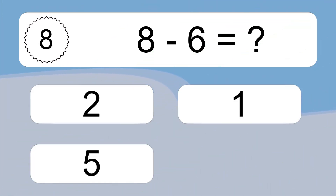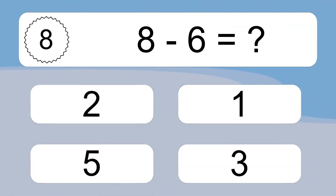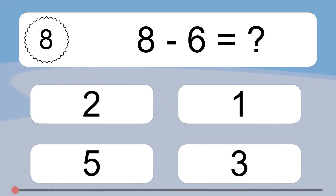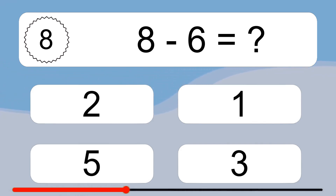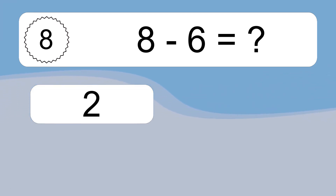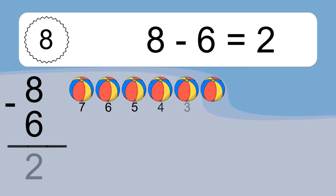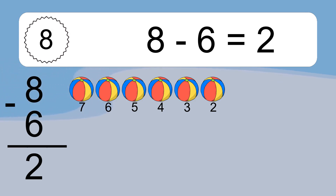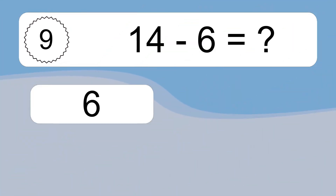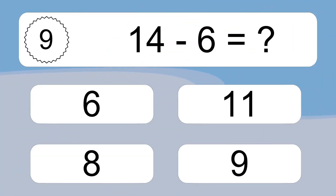8 minus 6 equals what? 8 minus 6 equals 2. Let's count it: 7, 6, 5, 4, 3, 2.